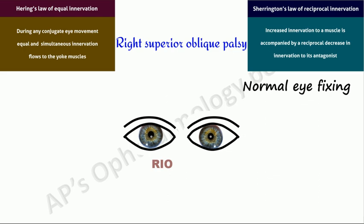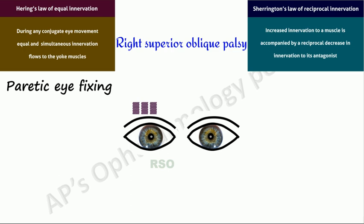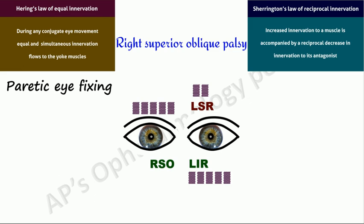With the paretic eye fixing, extra innervation flows to the weak right superior oblique to enable it to fix. By Hering's law, this same extra innervation flows to its yoke muscle, the left inferior rectus, causing it to overact, along with an inhibition by Sherrington's law of its antagonist, the left superior rectus. The overaction of the left inferior rectus and underaction of the left superior rectus both result in a hypotropia of the left eye.